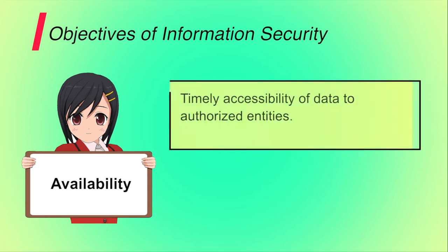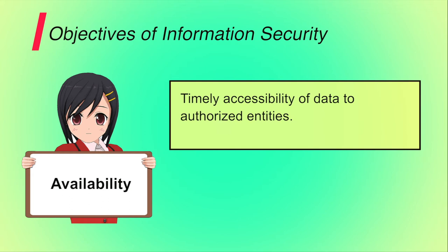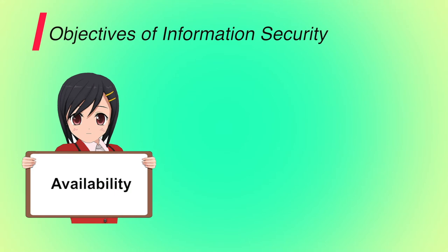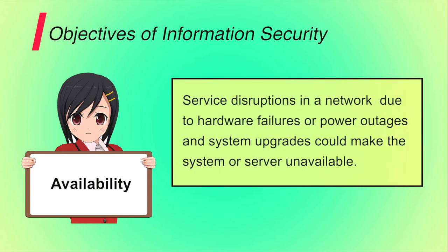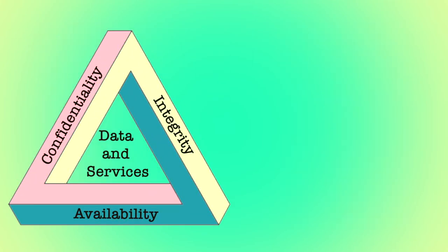Third is availability. It is ensuring timely and reliable access to and use of information. A loss of availability is the disruption of access to or use of information. For example, if you are trying to access any website and an attacker has already sent multiple requests to the server, the server will not be able to process your request, meaning the data is not available to the authorized user. Also, service disruptions in a network due to hardware failure, software failure, power outages or system upgrades could make the system or server unavailable. So when providing security, it should be kept in mind that data should be available to the authorized user whenever required.